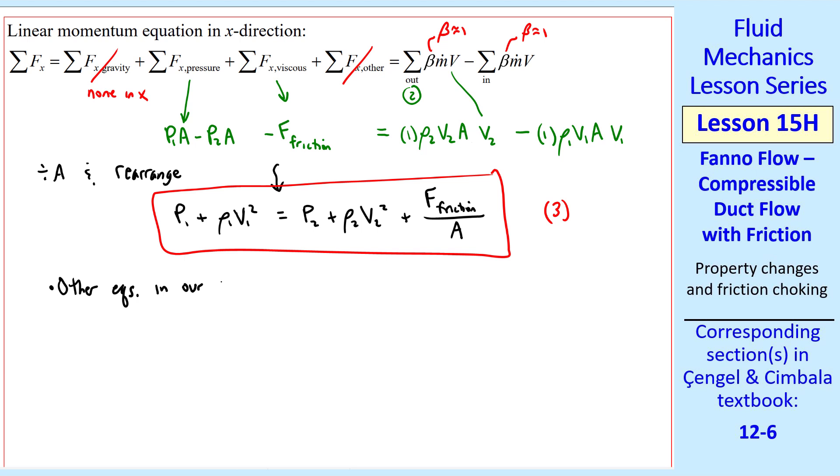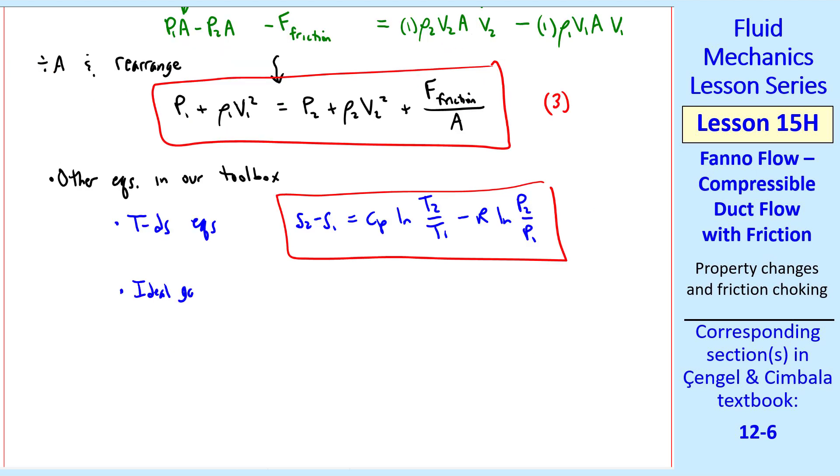There are other equations we can use in our toolbox. For example, the TDS equations for an ideal gas, one of which is S2 minus S1 equals CP natural log of T2 over T1 minus R natural log of P2 over P1. The ideal gas law, which we can write as P1 over rho 1 T1 equal P2 over rho 2 T2. And we have state equations for compressible flow, such as T0 over T equal 1 plus k minus 1 over 2 Mach number squared. This state equation is valid anywhere at 1, or 2, or star, or any other location, since it's a state equation, etc.